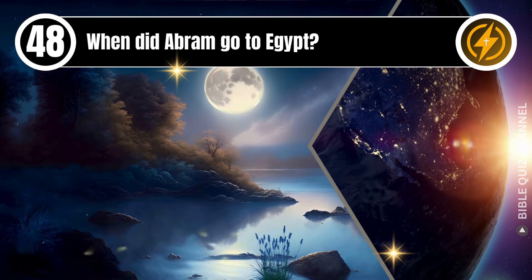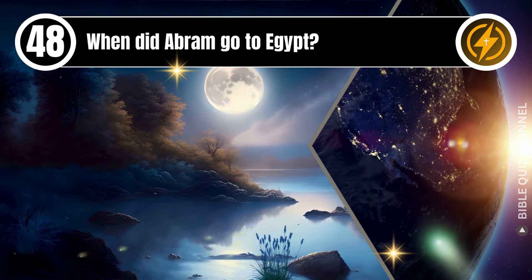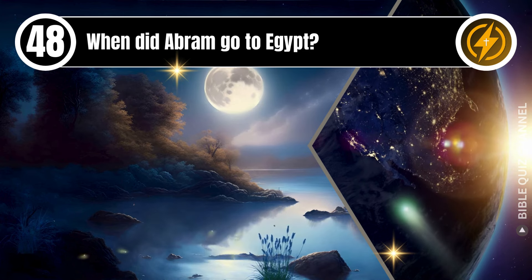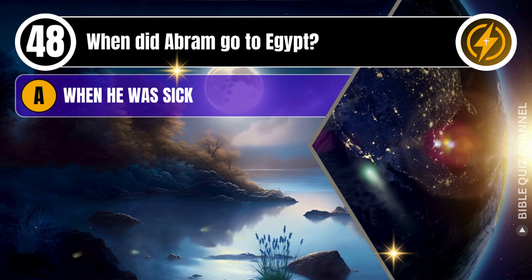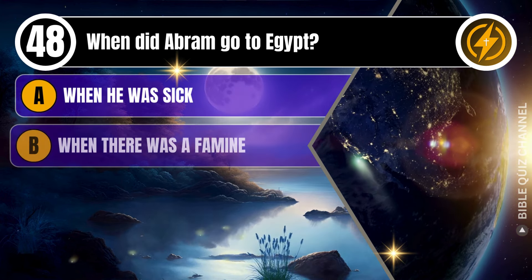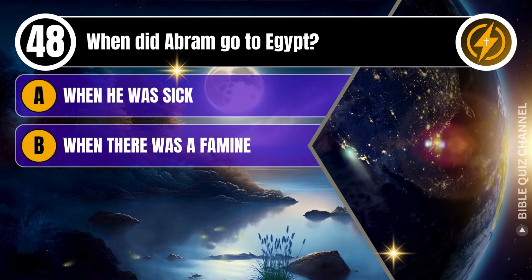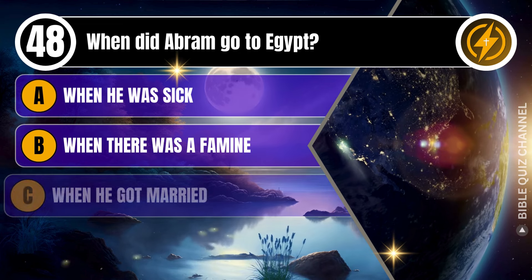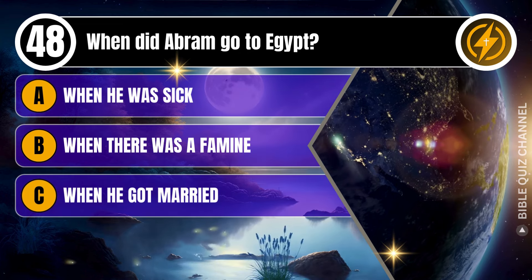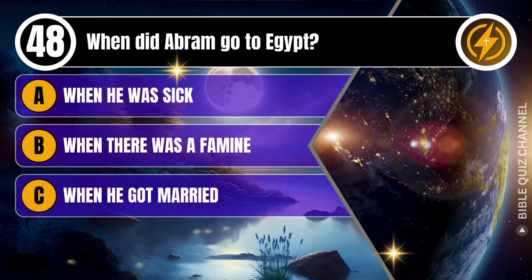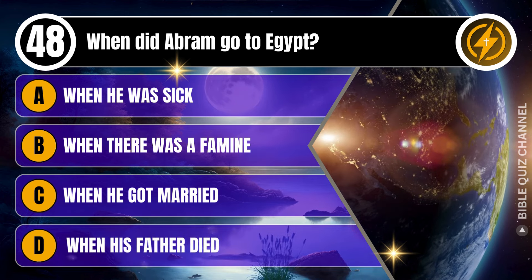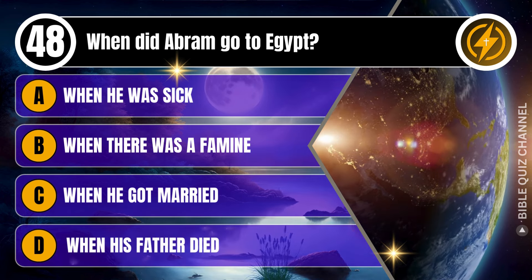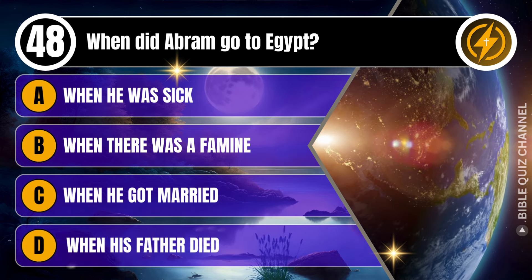Question 48. When did Abram go to Egypt? A. When he was sick. B. When there was a famine. C. When he got married. D. When his father died. You get 10 seconds.